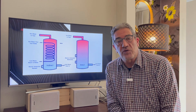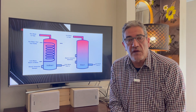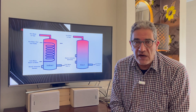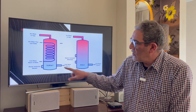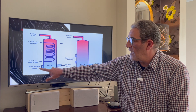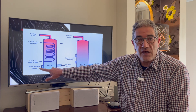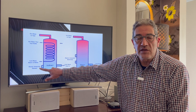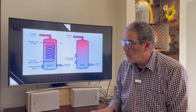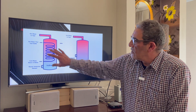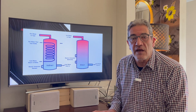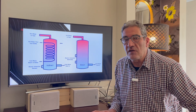Potable water is water that you can drink, shower in, and cook with. Usually the indirect cylinder will also have an electric immersion element as a backup, just in case the boiler stops working. These are the two main differences between direct and indirect cylinders.